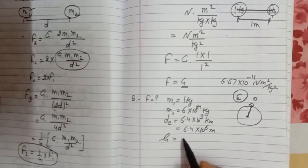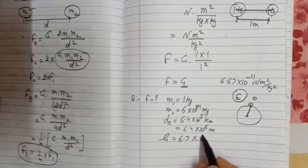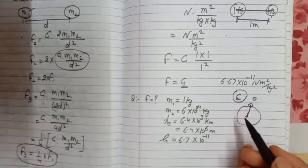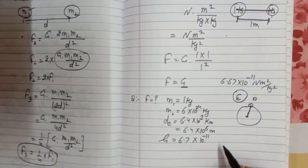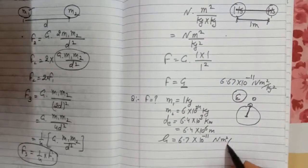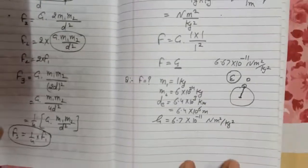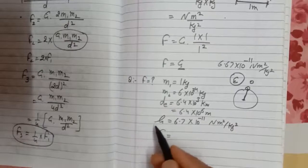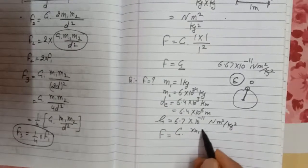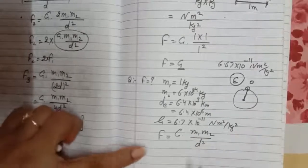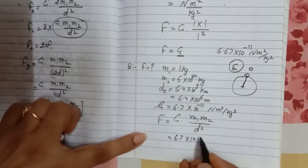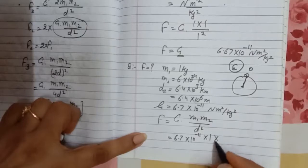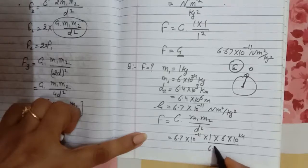These are the values given in the question. We have to find the value of force between them. According to the universal law of gravitation, F = G·M1·M2 / D². Putting in the values: G is 6.7 × 10⁻¹¹, M1 is 1 kg, M2 is 6 × 10²⁴, divided by D squared, where D is 6.4 × 10⁶ meters, whole squared.